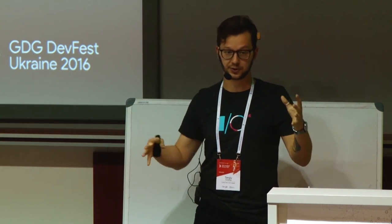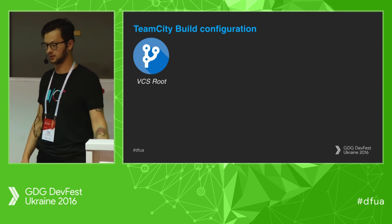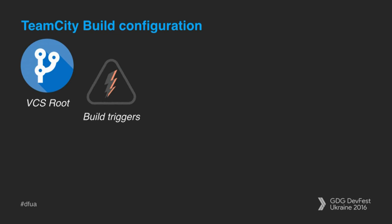TeamCity build configuration consists of several things. First you add VCS roots — what's cool is you can add two routes into one build configuration. I had a situation where I needed to release 45 different application flavors, and the configuration for those was in a separate Git repository. I needed to pull from two different repositories, merge them into one folder, and proceed with the automated release. Adding another VCS root took me about one minute — great.